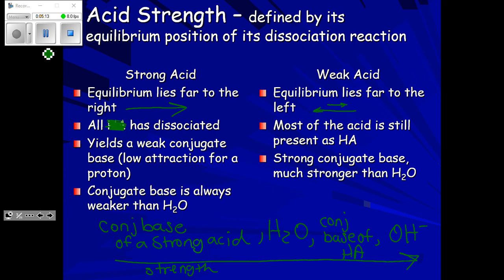Strong acids don't have KA values — if there's no arrow going both directions, there's no KA. Some books report their KA values as extremely large, which makes sense: if it's all product and no reactant, the value would be huge. Weak acid problems are all small-k problems, every single time. Every weak acid or weak base problem we work will be a small-k problem.